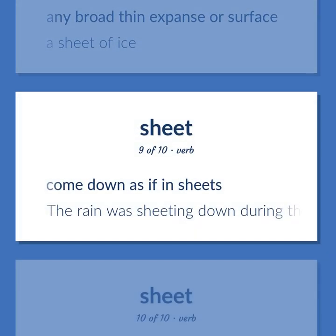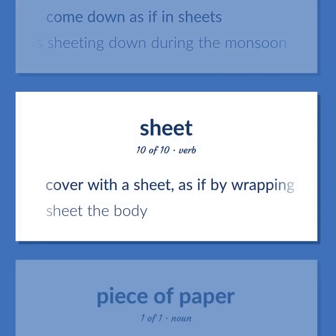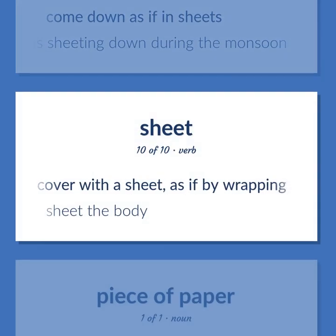Come down as if in sheets — the rain was sheeting down during the monsoon. Cover with a sheet, as if by wrapping — sheet the body.